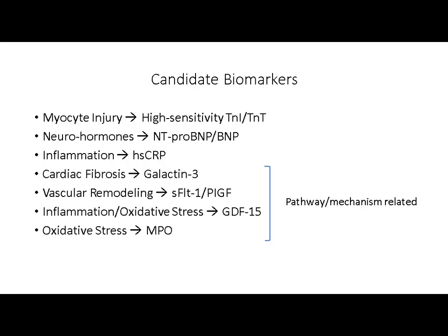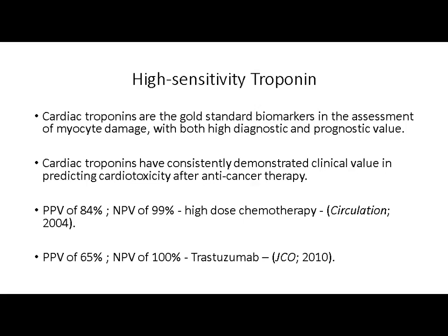The question is whether or not we can use the same biomarkers for these two different cardiotoxicity mechanisms. Looking at candidate biomarkers, we can divide them into biomarkers related to different pathways that eventually cause cardiotoxicity and myocyte injury. These include galectin-3, a marker for cardiac fibrosis; soluble FMS-like tyrosine kinase-1 and placental growth factor, markers for vascular remodeling; and markers for inflammation and oxidative stress like myeloperoxidase and GDF-15, as well as highly sensitive troponins for myocyte injury.